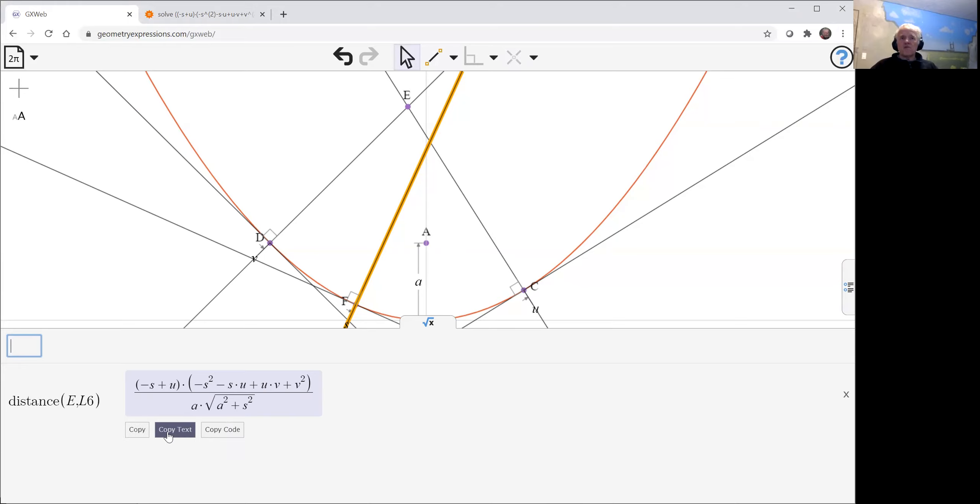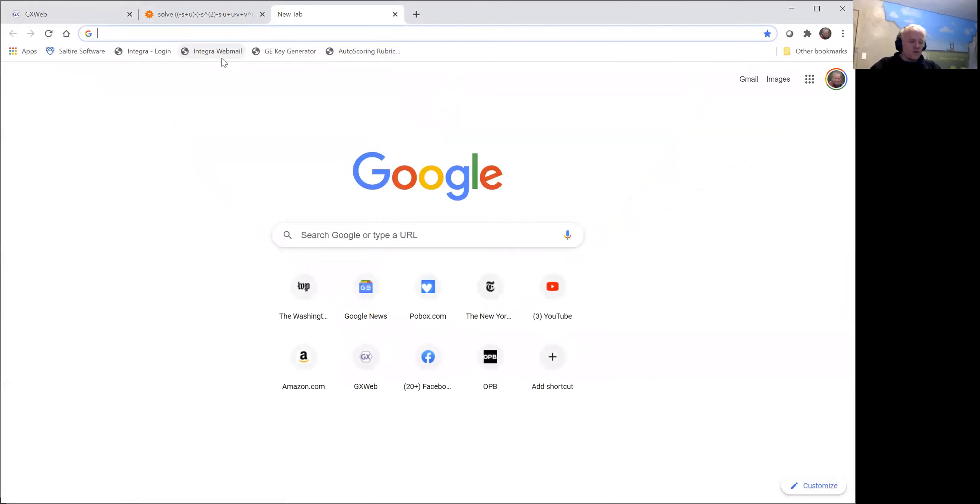I'm going to use Wolfram Alpha to solve it. Feel free to do it yourself by pencil and paper. To use Wolfram Alpha, we can copy text. That's the way to get stuff into Wolfram Alpha. Copy as text. And then let's go in Wolfram Alpha.